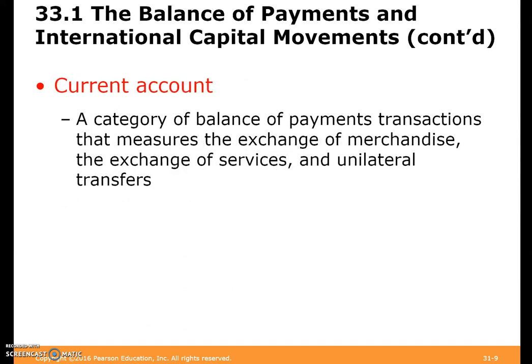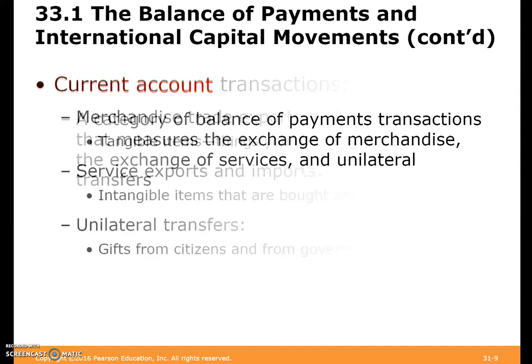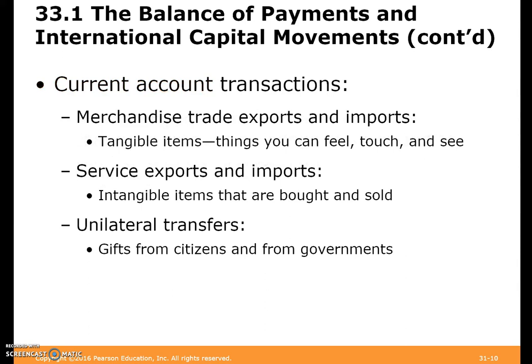The current account is a category of balance of payment transactions that measures the exchange of merchandise, the exchange of services, and unilateral transfers. Merchandising trade covers exports and imports of tangible items like clothes or computers. Service exports and imports are intangible items bought and sold, like intellectual property. Unilateral transfers are gifts from citizens and governments.